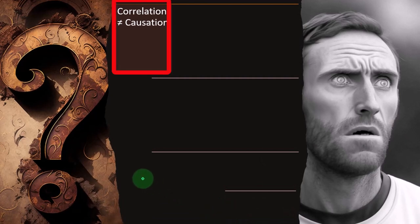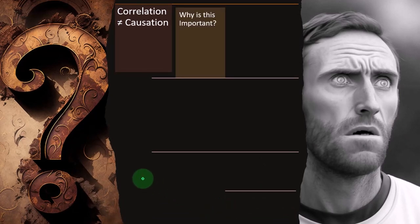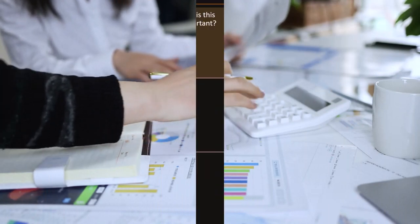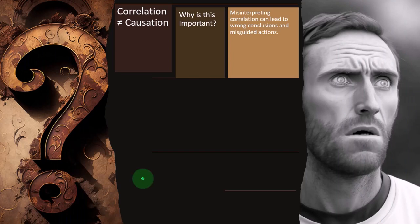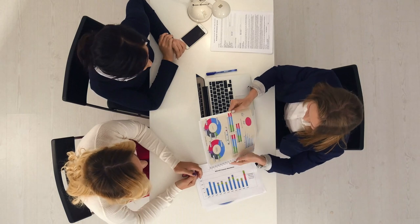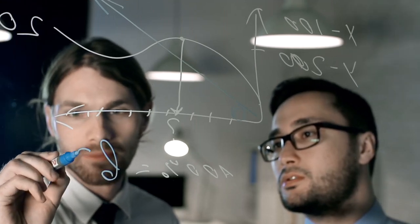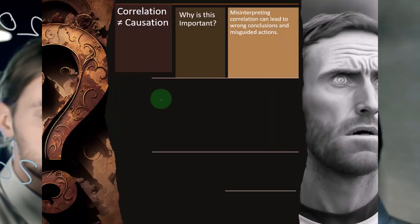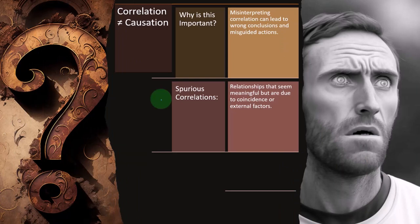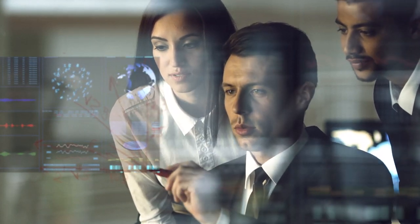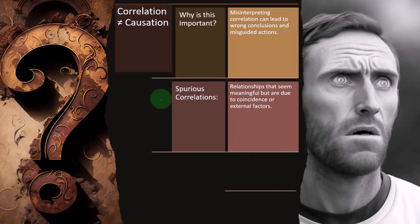Correlation does not equal causation — there's our common phrase, used often as a mantra. Why is this important? Misinterpreting correlation can lead to wrong conclusions and misguided actions. When people see a correlation, we want as human beings to determine there's a cause-and-effect relationship, and if we get that wrong, we take action on the wrong data. Remember: if there is a cause-and-effect relationship, we should have a correlation. But if there is a correlation, it doesn't necessarily mean there's a cause-and-effect relationship. Correlation is the first mathematical step to validate a hypothesis, but it's not the final factor.